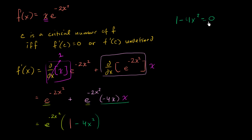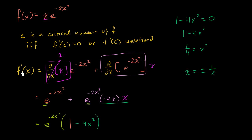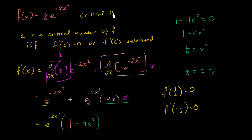So we solve one minus 4x squared equals zero. Adding 4x squared to both sides gives one equals 4x squared. Dividing both sides by four gives x squared equals one fourth. Taking the plus or minus square root, x equals plus or minus one half. So f prime of one half equals zero and f prime of negative one half equals zero. The critical numbers are one half and negative one half.